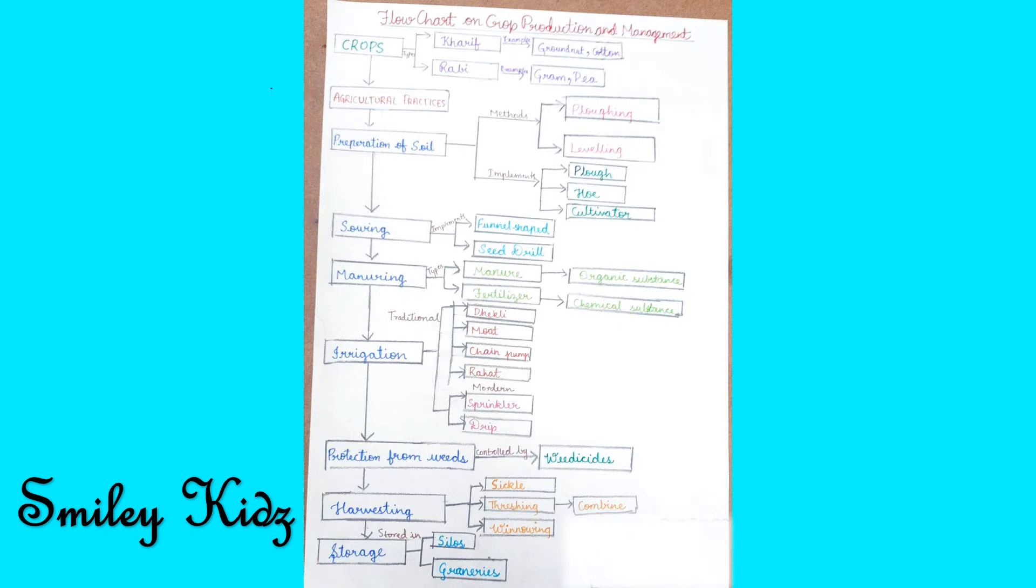This is the flowchart on crop production and management. Here we covered crops, the types of crops with examples. We also have the agricultural practices which involve preparation of soil, sowing, manuring, irrigation, protection from weeds, harvesting, and storage.